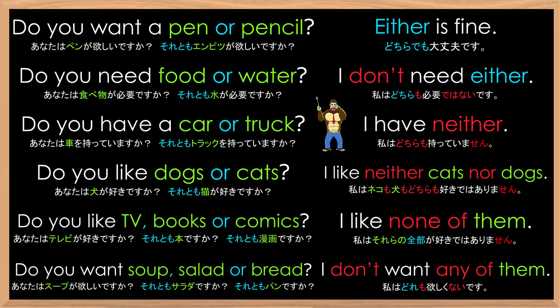Okay, you read the sentences next. 'Do you want a pen or pencil?' 'Either is fine.' 'Do you need food or water?' 'I don't need either.' 'Do you have a car or truck?' 'I have neither.' 'Do you like dogs or cats?' 'I like neither cats nor dogs.' 'Do you like TV, books, or comics?' 'I like none of them.' 'Do you want soup, salad, or bread?' 'I don't want any of them.'